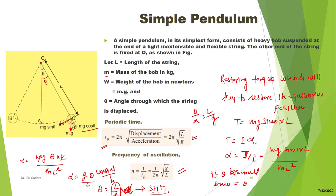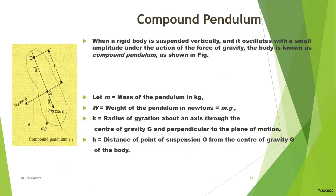Now we will talk about the compound pendulum. When a rigid body is suspended vertically and oscillates with a small amplitude under the action of gravity, the body is known as a compound pendulum. In the simple pendulum, the whole mass is concentrated at a point; in the compound pendulum, the whole mass is distributed over an area.